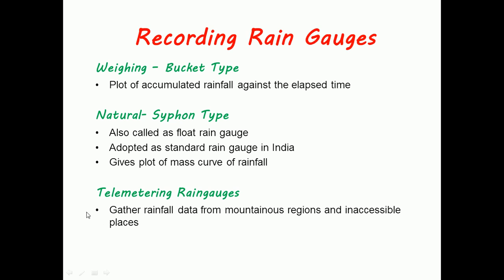Telemetric rain gauges gather rainfall data from mountainous regions and inaccessible places where other recording rain gauges cannot be used due to their inaccessibility.